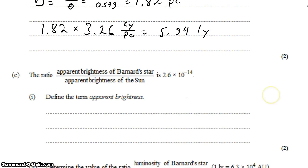Next up, we're given some information about the ratio of the apparent brightness of Barnard's star to the apparent brightness of the Sun. We know the value of that. And we're first asked to define the term apparent brightness. Which is something that we have an equation for. B equals L on 4 pi d squared. So we need to define all those terms. B is apparent brightness. L is luminosity. And D is the distance to Earth.